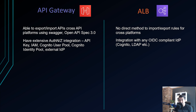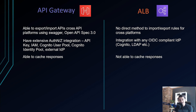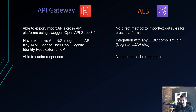API Gateway is able to cache responses — for a specific method that returns repetitive values, you can enable caching. ALB does not offer response caching.